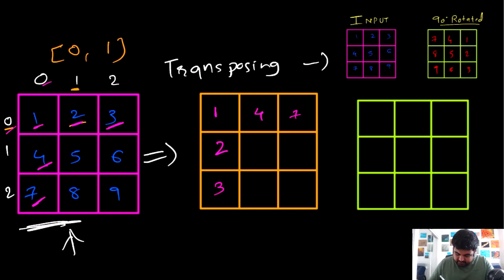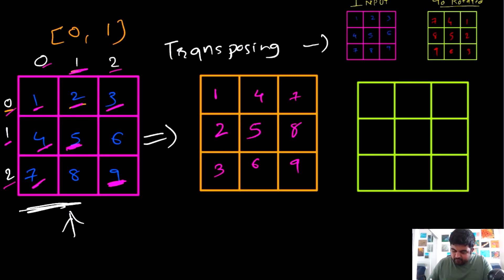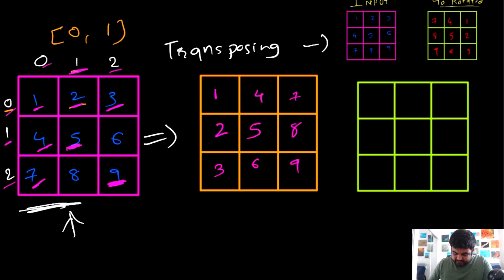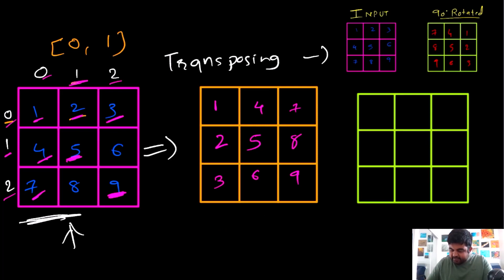We are going to repeat the same process. This 5 will not have any impact because its position is (1,1). But for the 6 and 8, we will actually have to swap their values — so now over here we would have the value 8 and over here we would have value 6. And this 9 will remain at the same position because its value is (2,2). Now basically we have created all the rows and converted them to different columns.